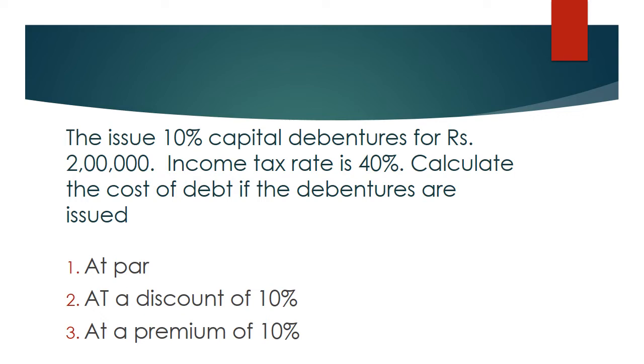Income tax rate is 40%. Calculate the cost of debt if the debentures are issued. There are three cases: one at par, at discount or at premium. Discount of 10% and premium as well as that of 10%. Let us understand this question first.